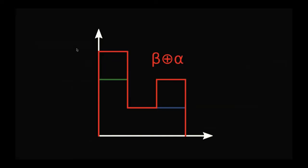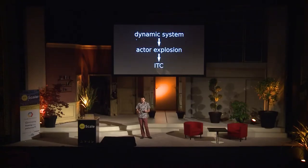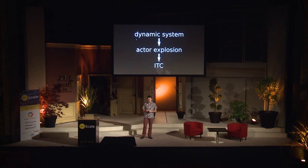We can merge the causality information of version vectors by taking the maximum of counters for every node. While this is something very popular in distributed systems and it works well in most cases, there is one case where it breaks down, and that is in dynamic systems with a lot of churn.